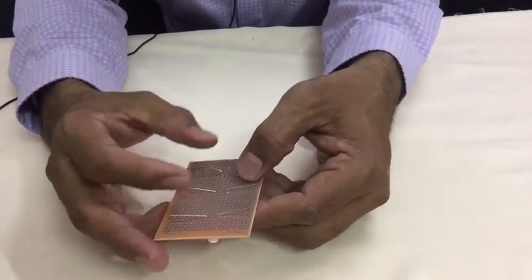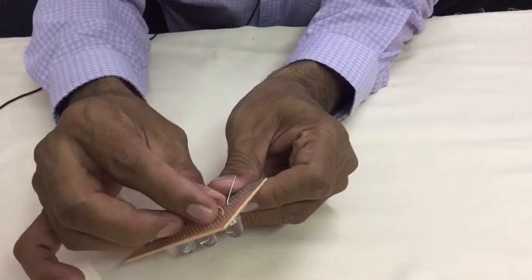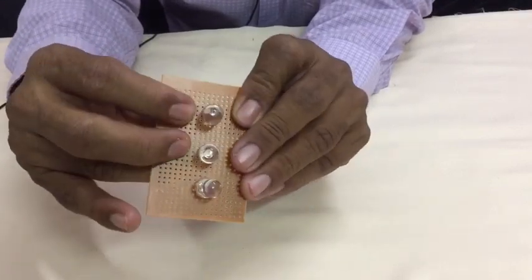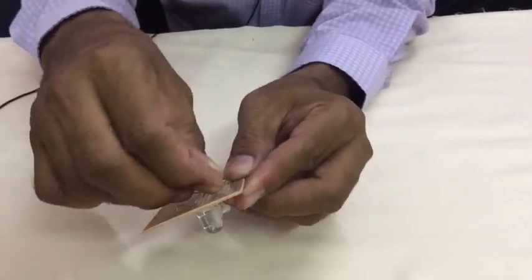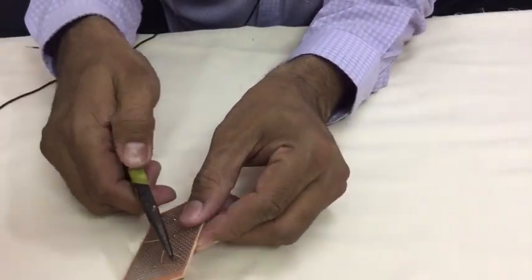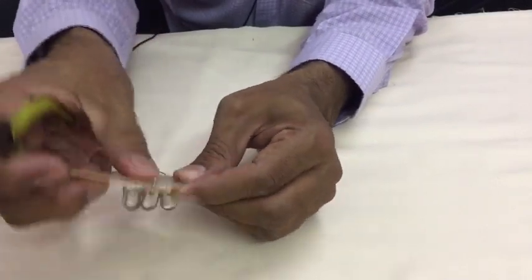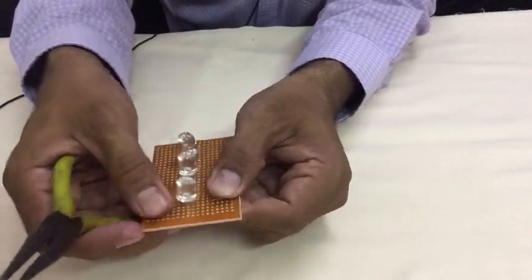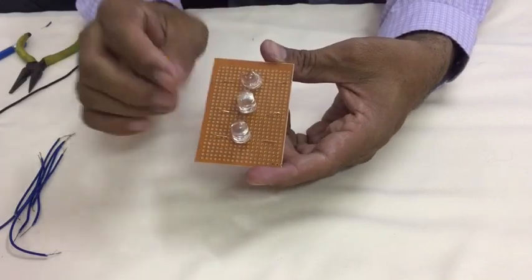Now turn the PCB and you can see different terminals, insert in any hole, you can do with hand or with the tool. Similarly, you have to do for all LEDs.